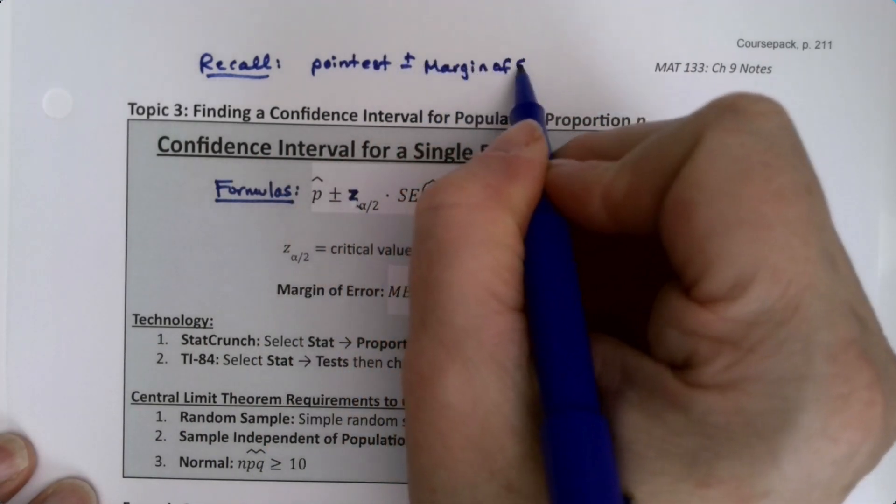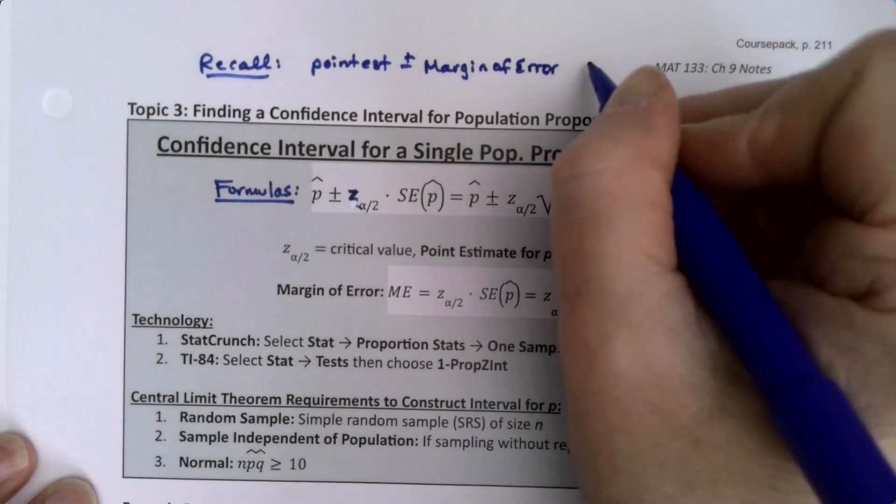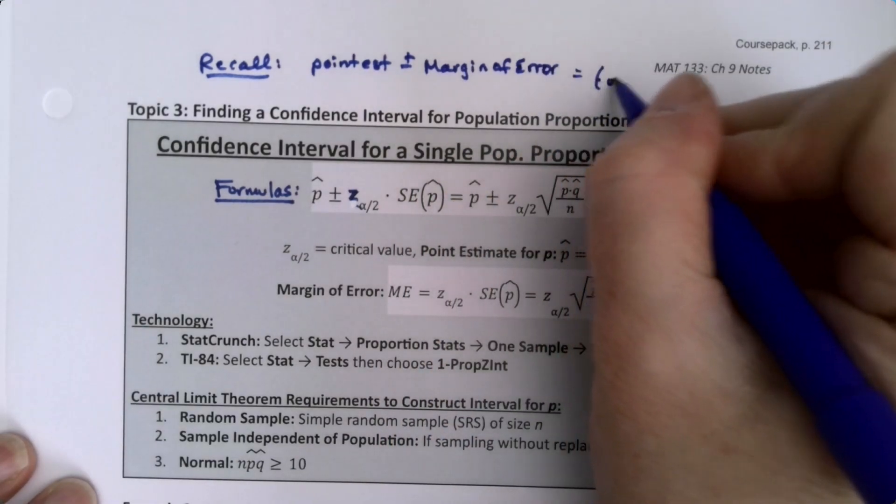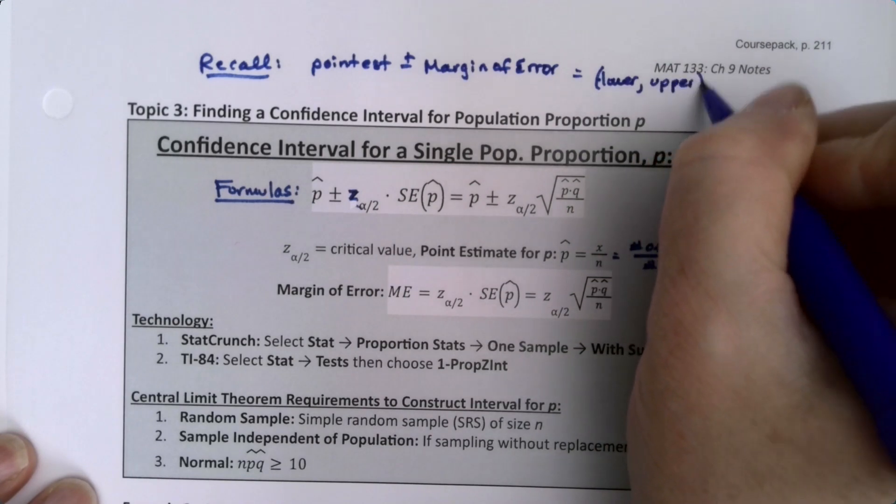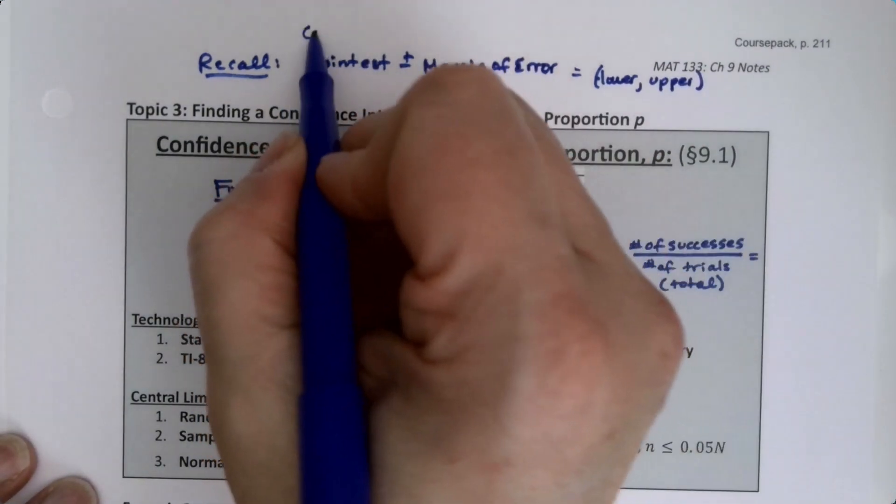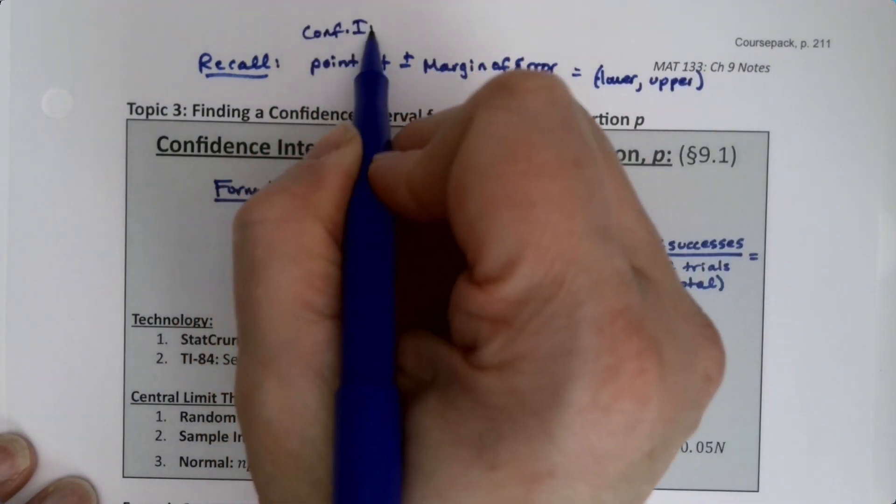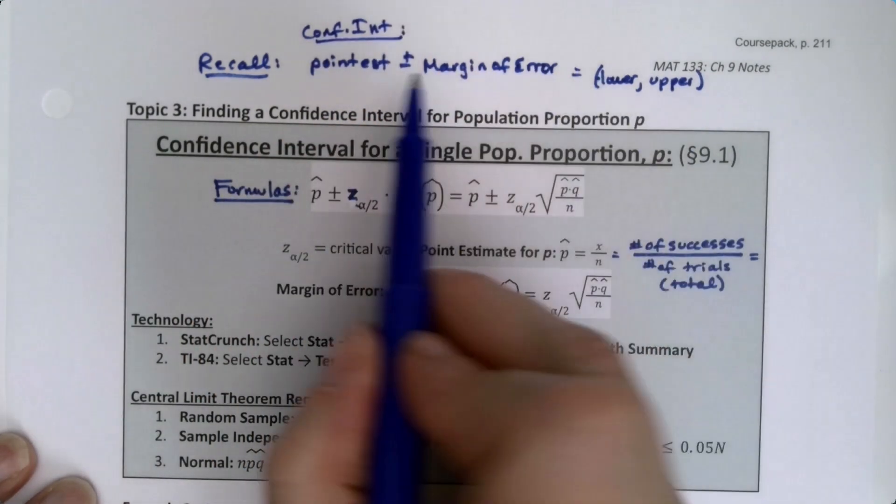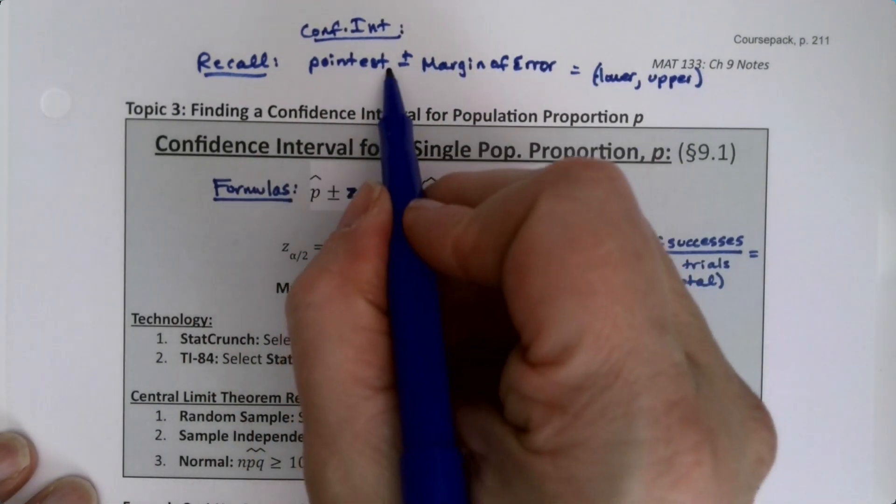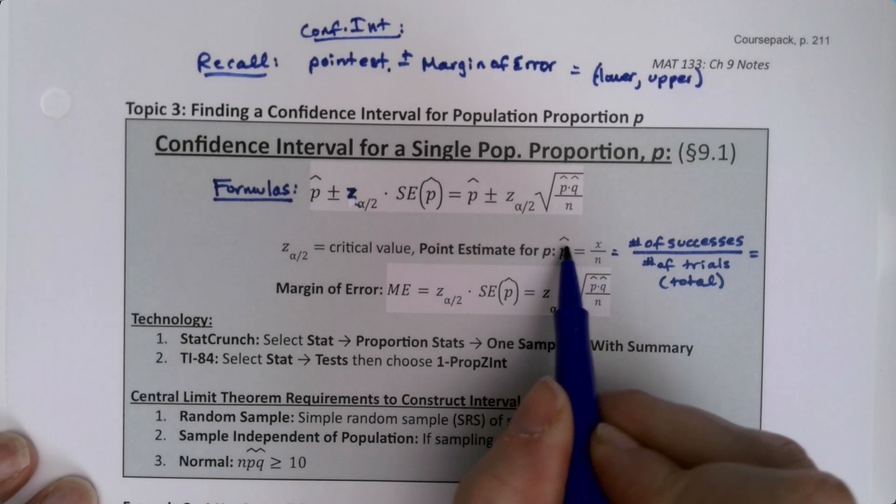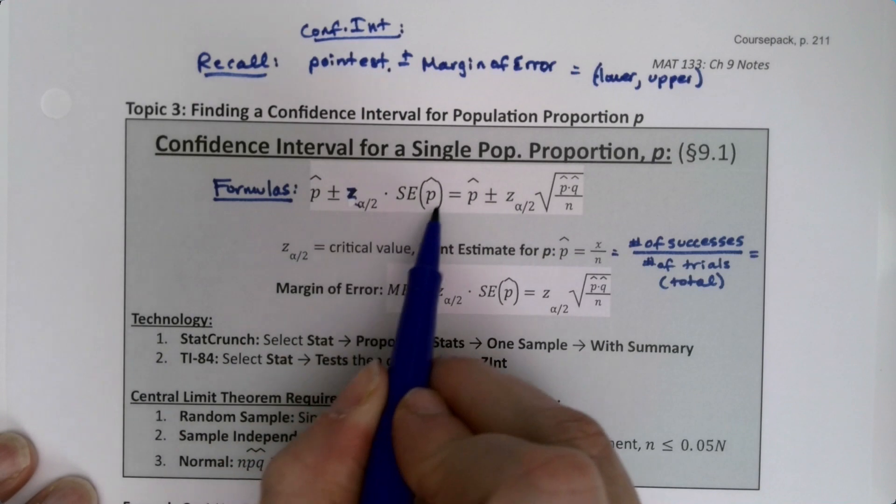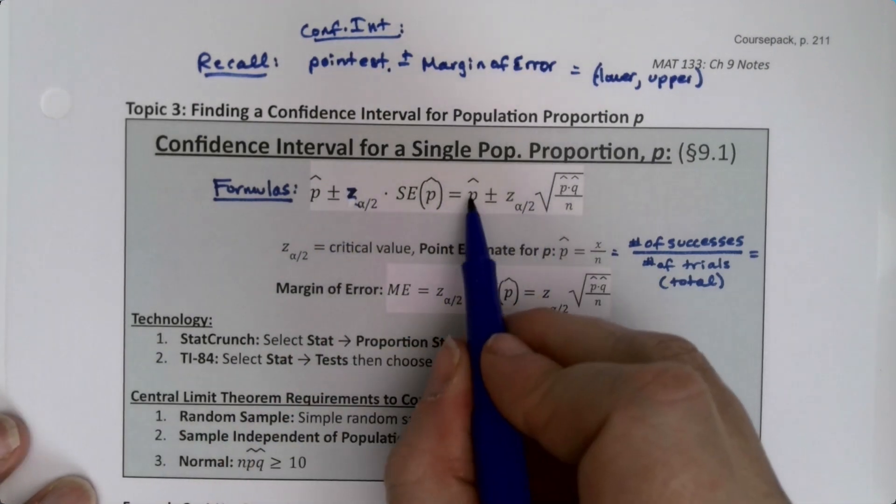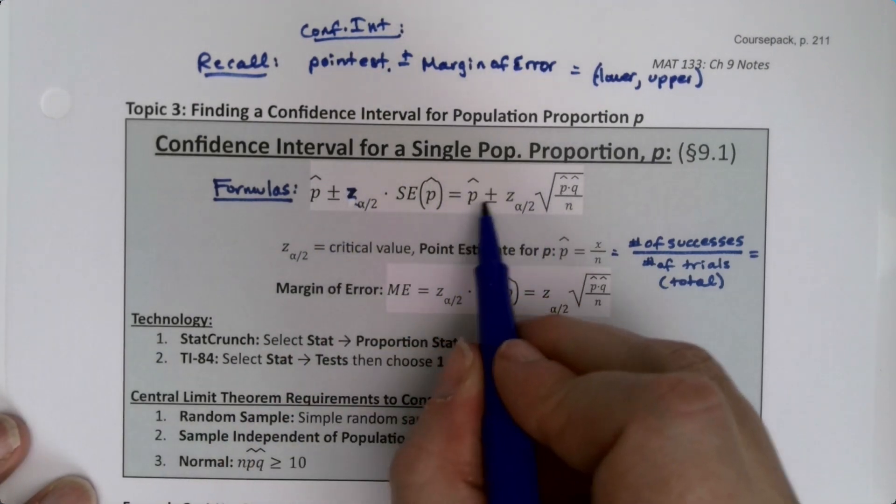That gets you your interval—your lower number comma your upper number. This is how confidence intervals work. If you look at the formula, the point estimate is the p hat right before the plus or minus, and then you add and subtract your margin of error.